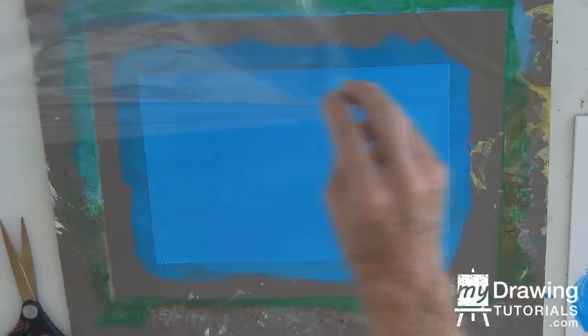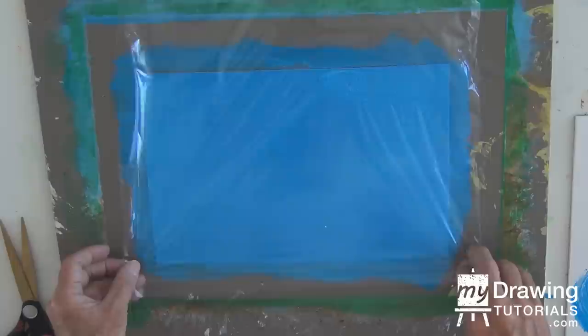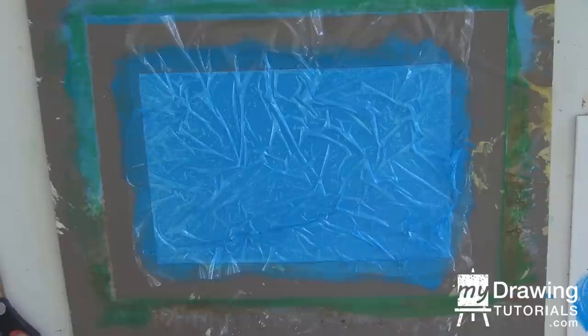Okay this is quite wet so now we'll apply the plastic very carefully, just lay it on like that and crunch it a bit, scrunch it a bit, crunch it up with your hand to create some texture.